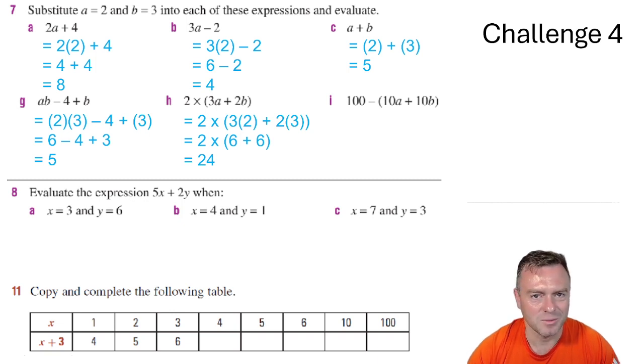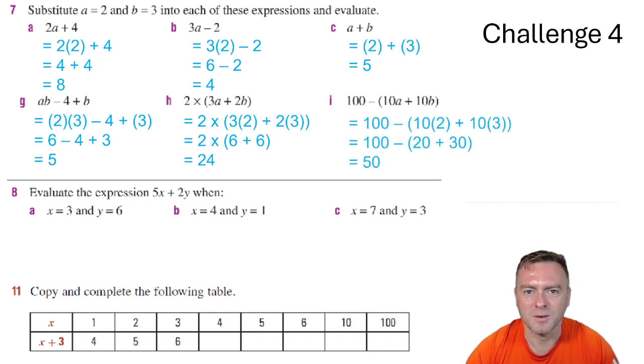The next one here the brackets are really important. Remember bodmas we need to follow that first. So we've got 100 minus but it's inside the brackets. So inside the brackets we've got 10 times 2 plus 10 times 3 which would give you 20 plus 30. So 100 minus 50 which then leaves you 50.